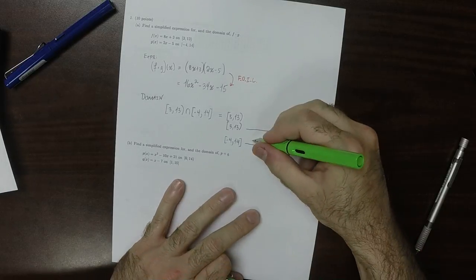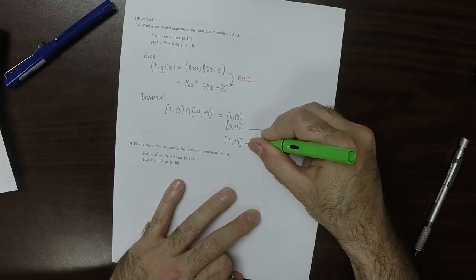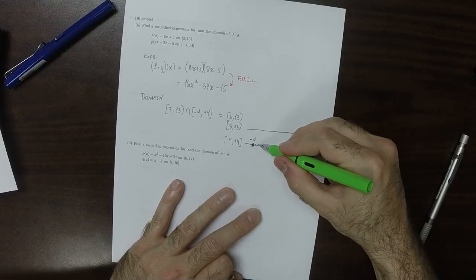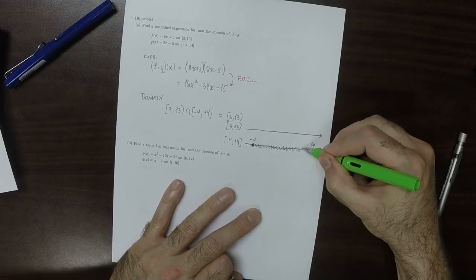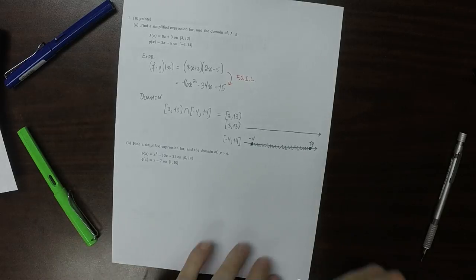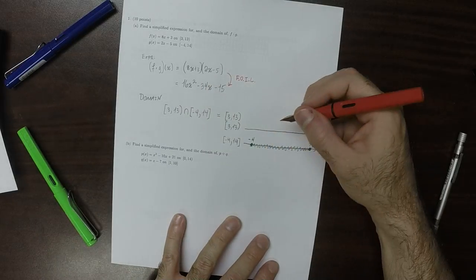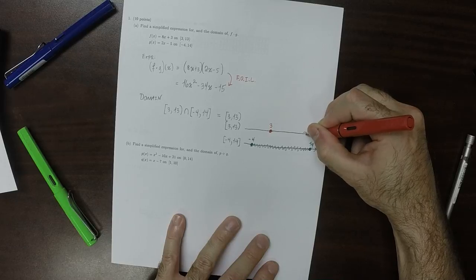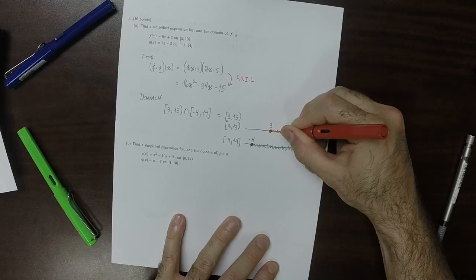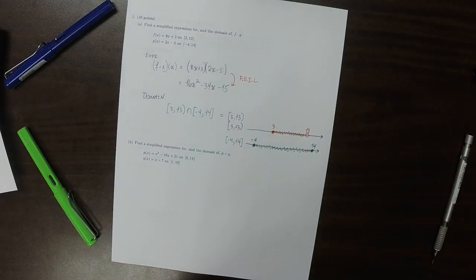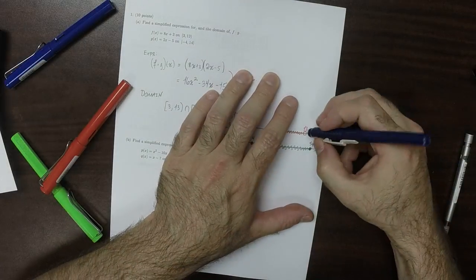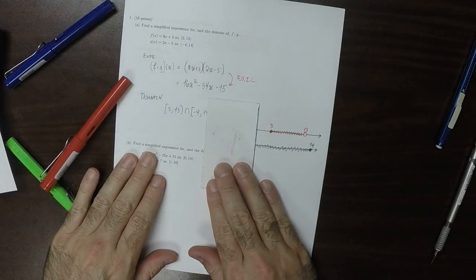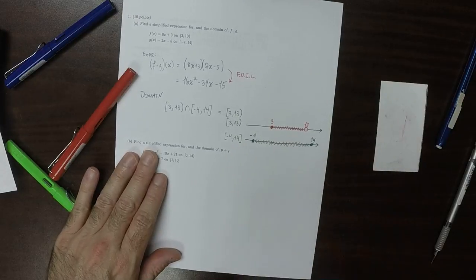So negative 4 is the leftmost point, and positive 14 is the rightmost point. So this set looks like this. Then [3,13) looks something like this, closed at 3 and then open at 13. And we want to know everywhere that we have a red and a green point at the same time. Well, that's exactly when we have a red point.